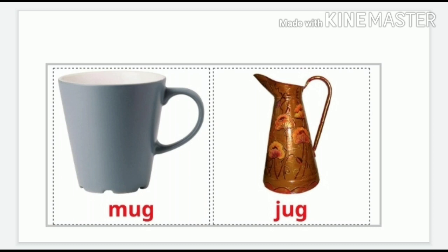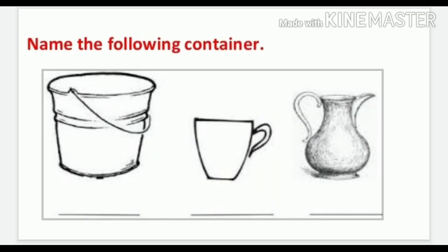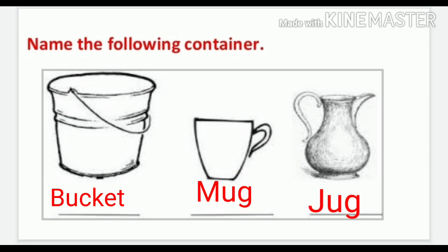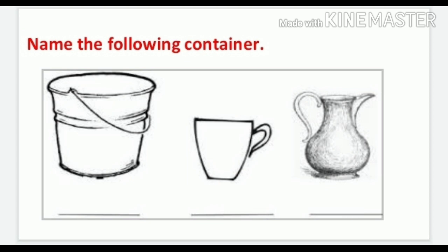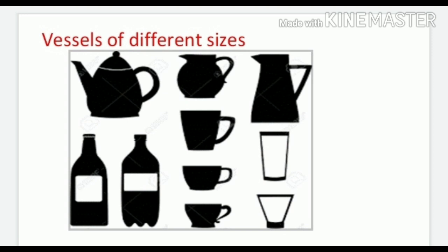Aap picture mein dekh rahe honge ek jug diya hua hai aur ek mug. Jug to aap ne dekha hua, jis mein paani store karte hain, right? And mug is like a coffee mug. Ya phir aap jo nahate hain to baalti ke saath mug use karte hain na. To aap dekhiye picture mein, hamare in vessels ke naam batayenge. Inhe hum bartan bolte hain Hindi mein, lekin English mein kya bolenge? We will call them containers, or vessels.